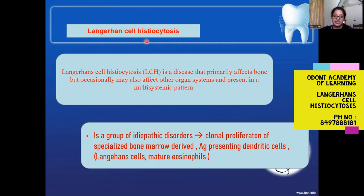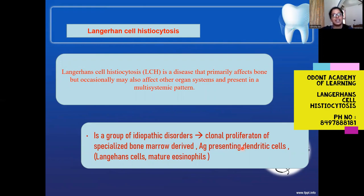What are the cells of origin or which cells are affected? As the name says, there are two types of cells more commonly seen in this condition: the Langerhans cell and the histiocytes. There is an increased or clonal proliferation of these cells, and other immune cells such as eosinophils are also seen here.